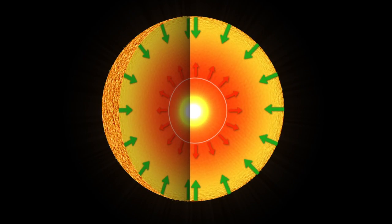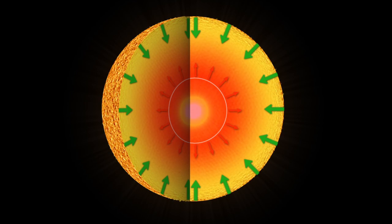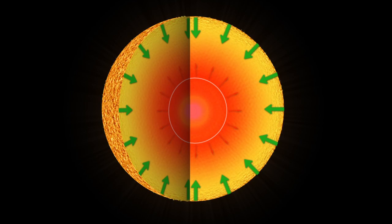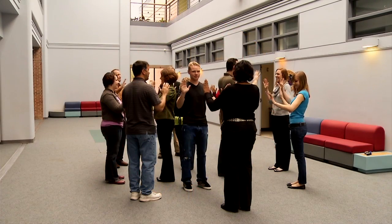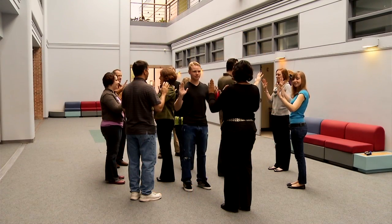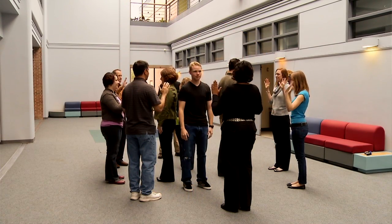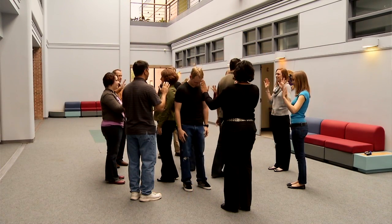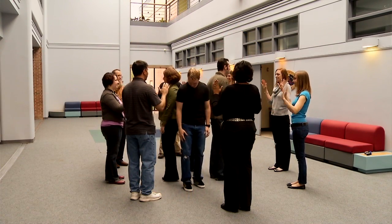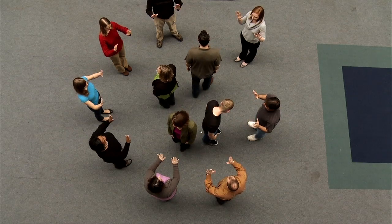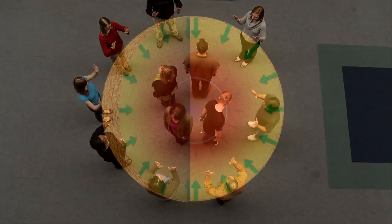Eventually, the star runs out of hydrogen to fuse in the core, and the balance of gravity and energy from fusion is broken. When this happens, gravity wins, and the participants in the core of the star drop their hands and move slightly closer together. The participants in the shell never lower their hands, as gravity is always in effect.